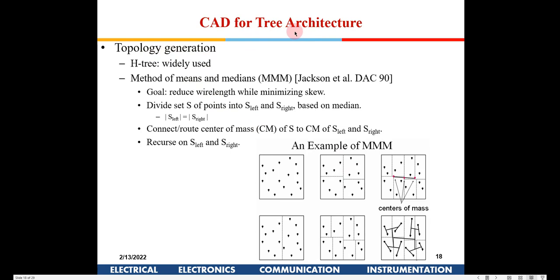For H-tree topology generation, you can use a CAD tool. Suppose dots indicate flip-flops across the chip. The tool will now divide the chip into quadrants — but rather than dividing by area, the better option is to divide based on the total number of flip-flops, keeping the number of flip-flops equal on both sides. This dividing line need not be exactly at the center of the chip.